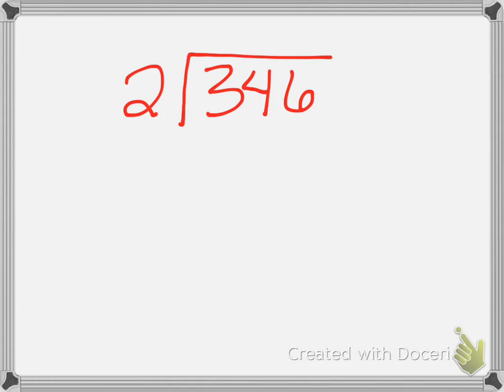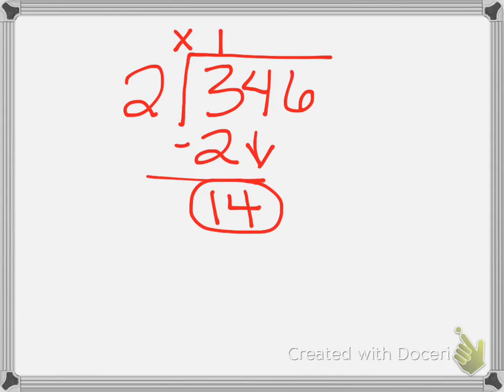The last example I would like to do is 346 divided by 2, and I know that 2 goes into 3 one time. And I'm going to multiply that, so 1 times 2 gives me two hundreds. I subtract it, bring down my tens place, and I now have 14 divided by 2. And I do like the kids to circle what they're dividing by. It just helps them and gives them a good visual. I know that 7 times 2 is 14.